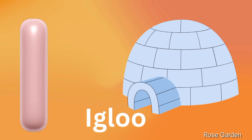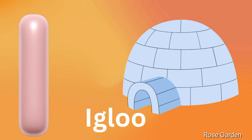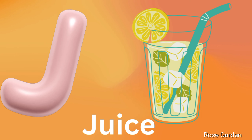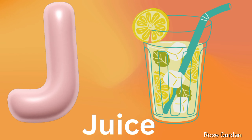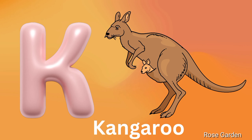I is for Igloo. J is for Juice. K is for Kangaroo.